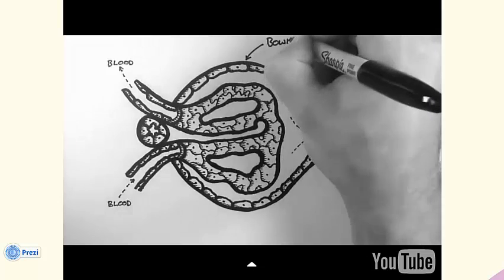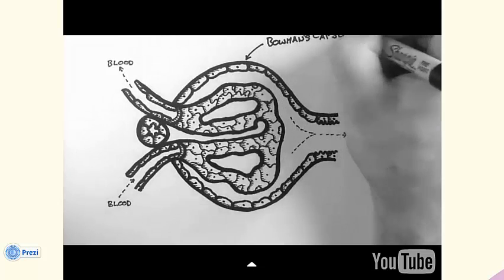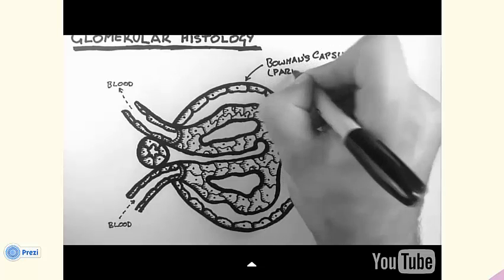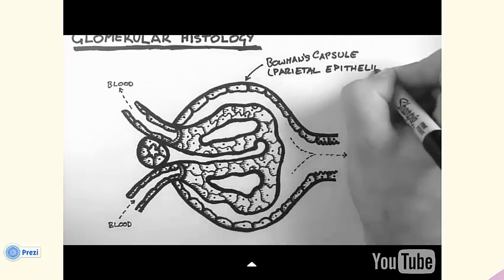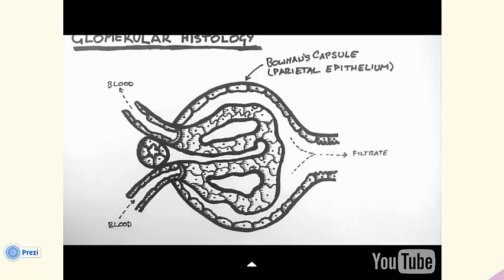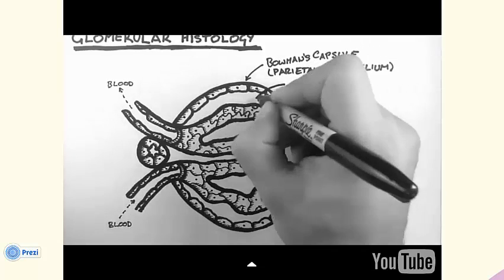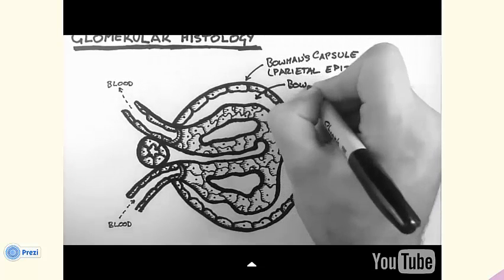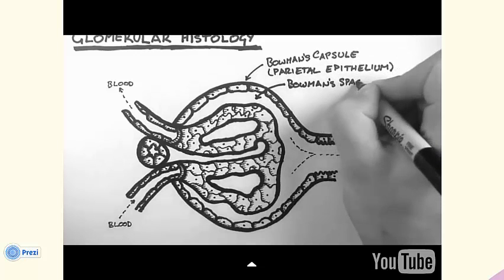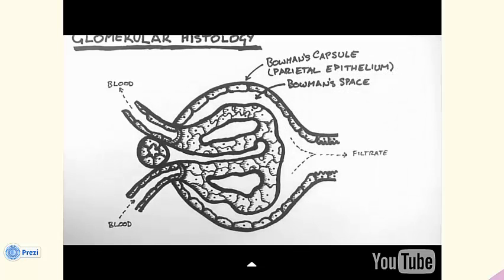The glomerulus is surrounded by Bowman's capsule, which is made of epithelial cells that we call parietal epithelium. Epithelium is one of the four basic types of tissue, the others being muscular, nervous, and connective tissue. Epithelium lines the surfaces of structures of the body. Between the parietal epithelium and the capillaries, we have Bowman's space — the area into which filtrate collects before flowing into the proximal tubule.